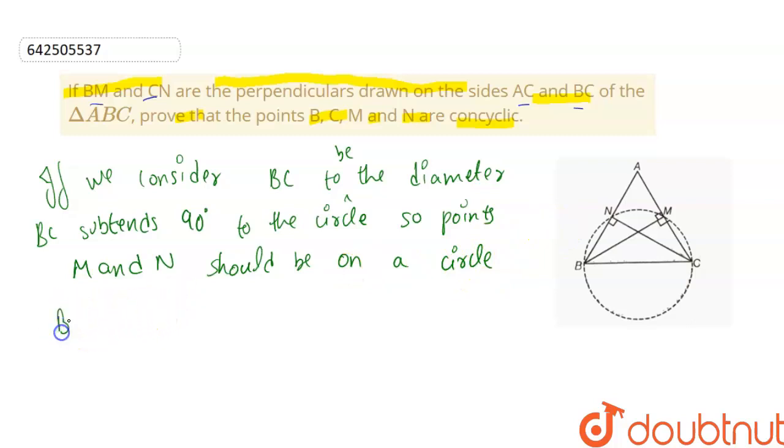So, B, M, C and N are concyclic. Hence proved.